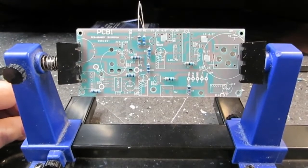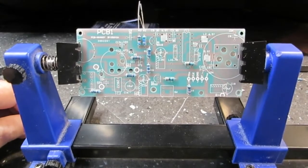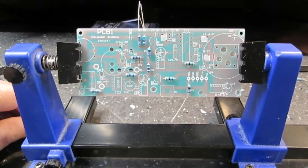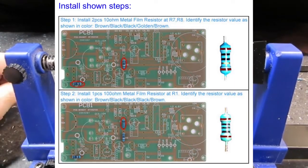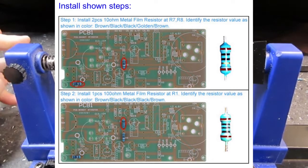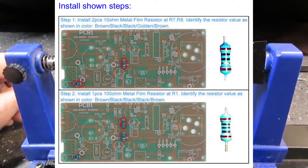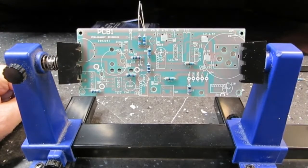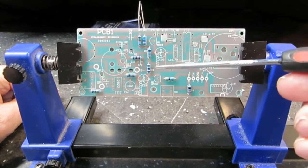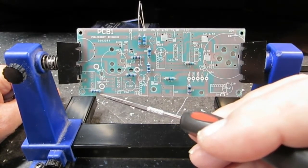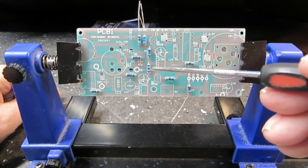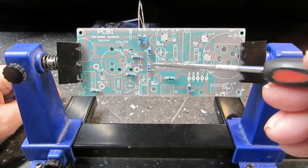For this part of the video, what we're doing is installing the resistors into the board. If we look at our instructions that were provided by IC station, the PDF, it says step one, install two pieces 10 ohm metal film resistor, R7 and R8. And if we look here, I believe that's R8 there, and R7 is over here, right there. So those two have been installed.